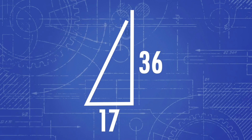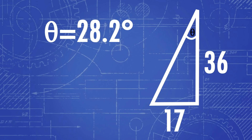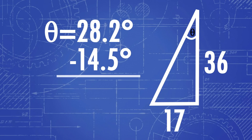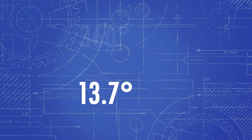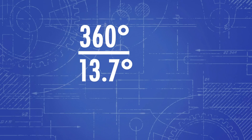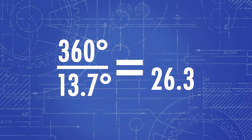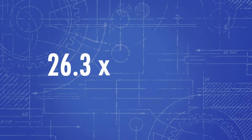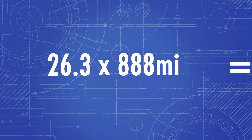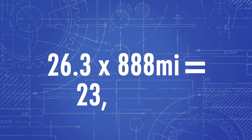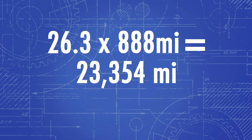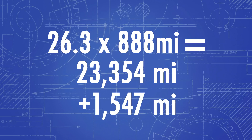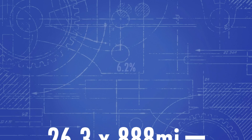Using those measurements, we get an angle of 28.2 degrees, meaning we have a difference of 13.7 degrees. 360 divided by 13.7 is 26.3, which means those points are 1/26th of the circumference of the Earth apart. So 26.3 times our northerly distance of 888 miles gives us a circumference of 23,354 miles — only 1,547 miles less than the actual circumference, meaning we were only off by 6.2%.